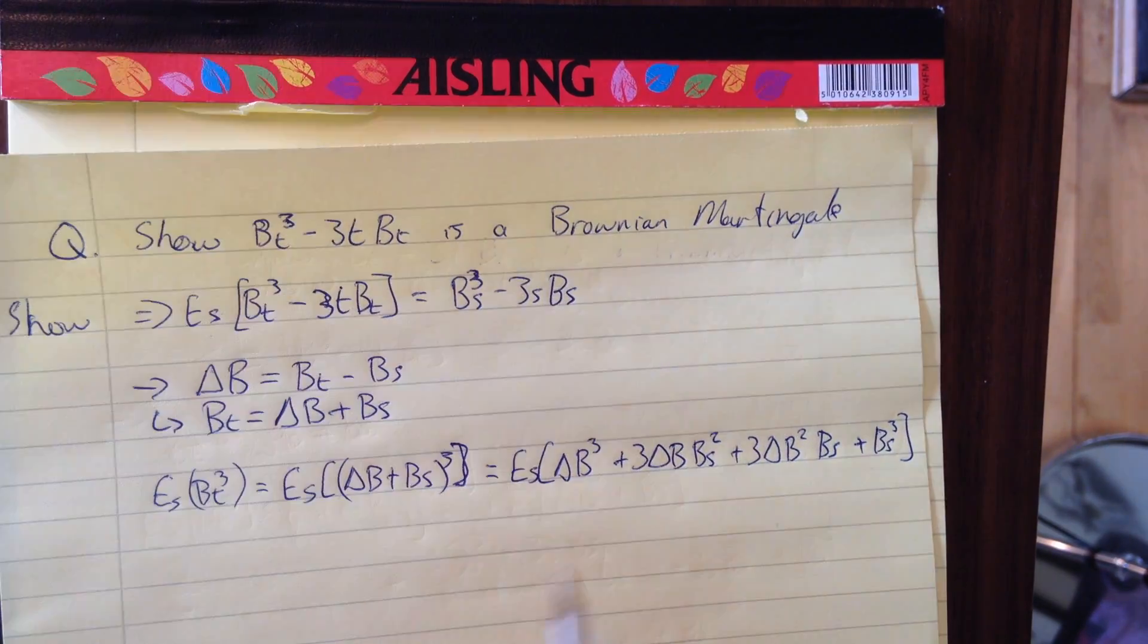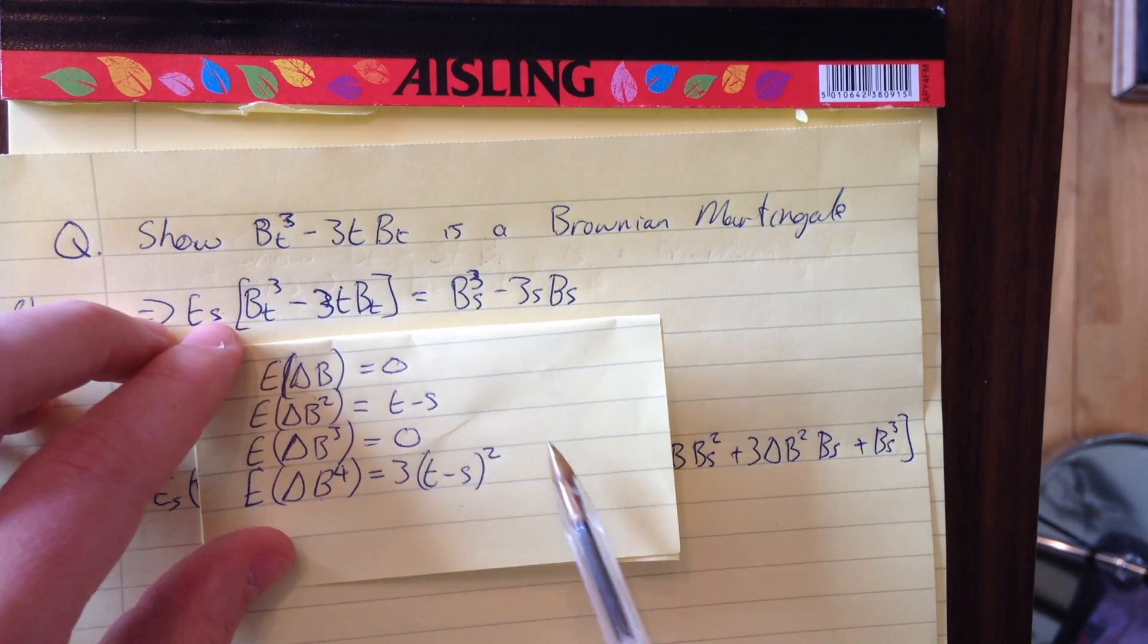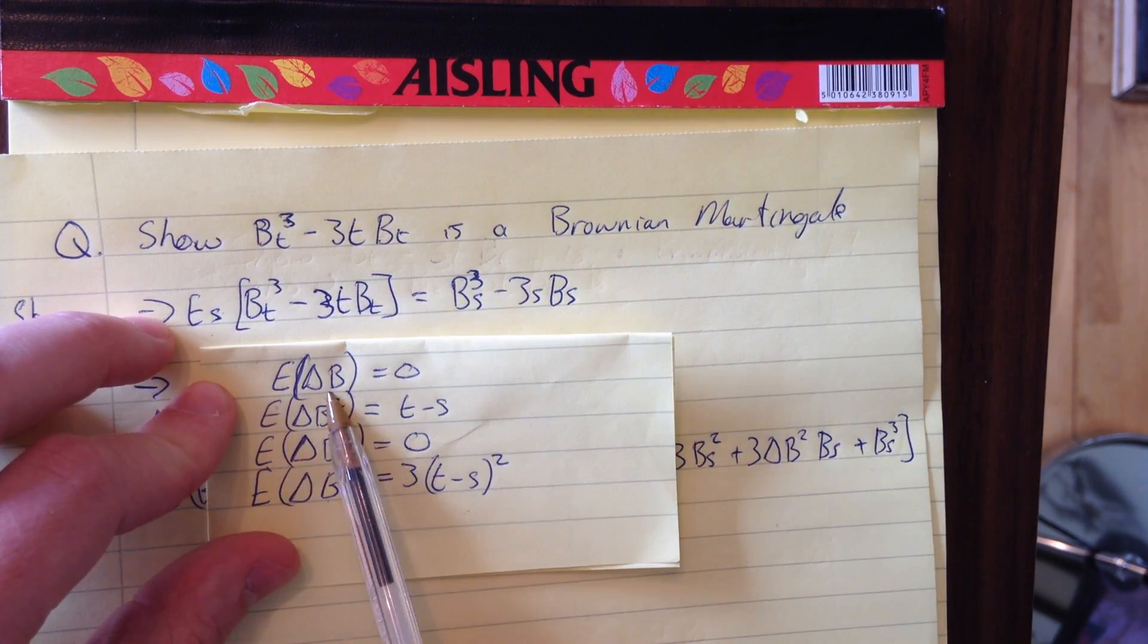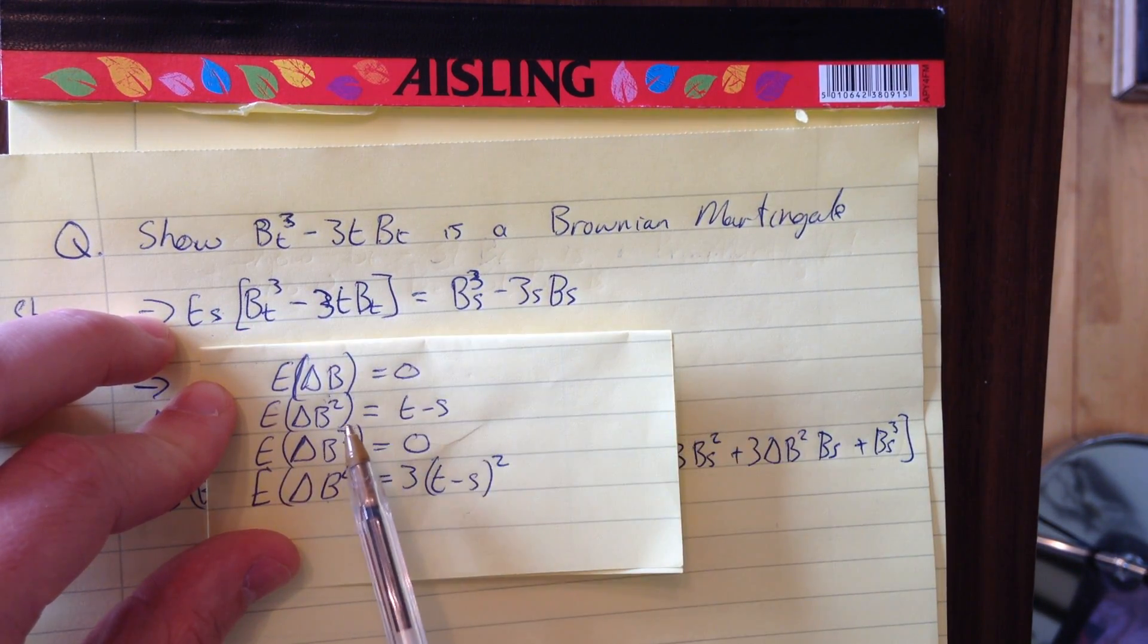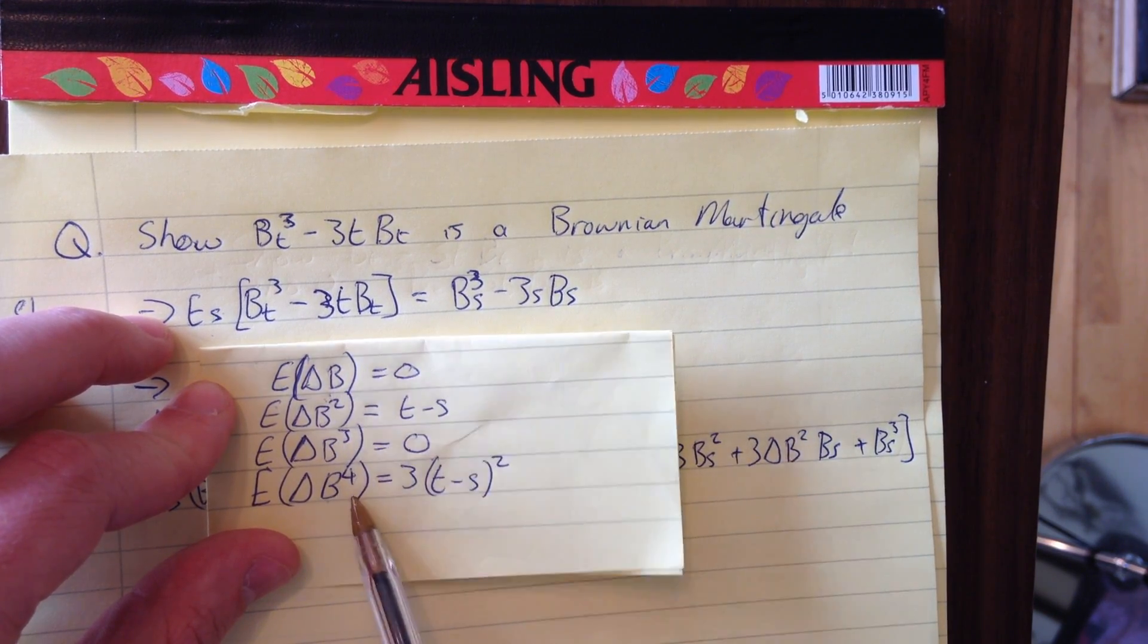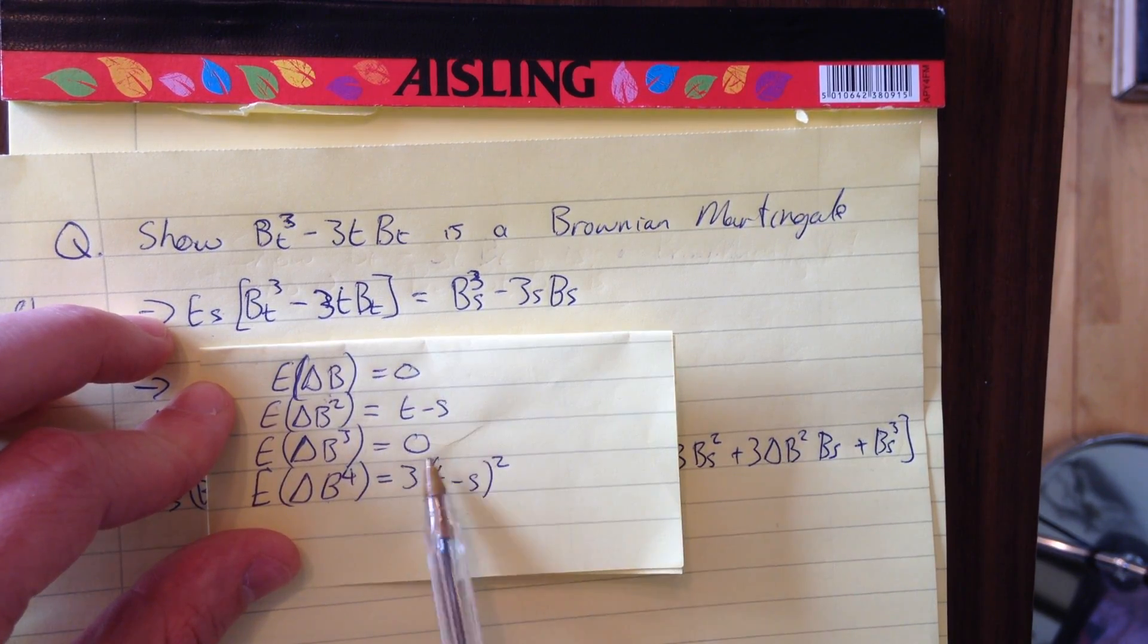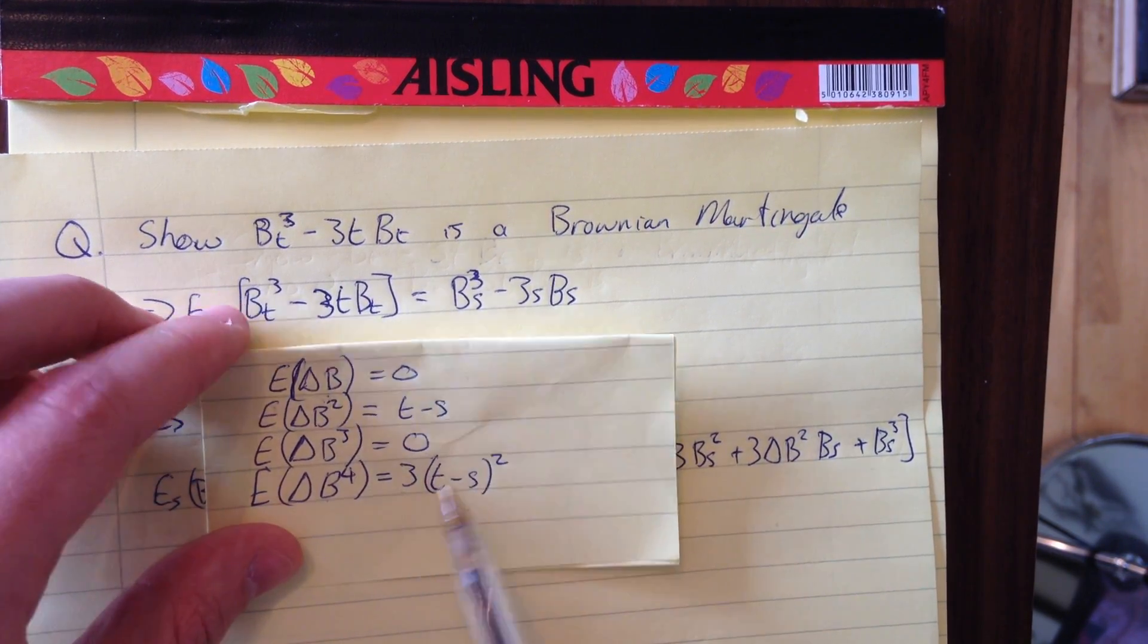This might look confusing, but for the delta B terms, we use this cheat sheet: the expected value of delta B is 0, delta B^2 is T - S, delta B^3 is 0, and delta B^4 (we won't use this, but it's worth including) equals 3(T - S)^2.